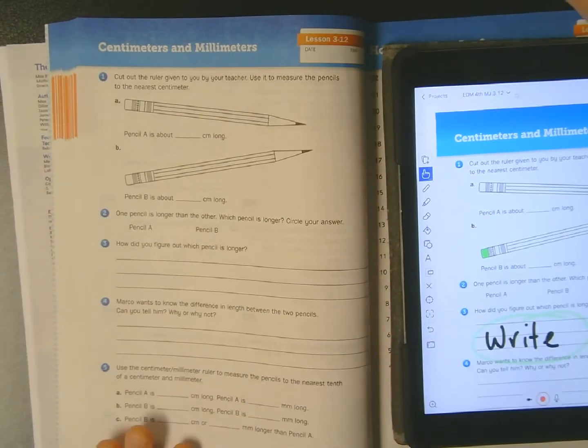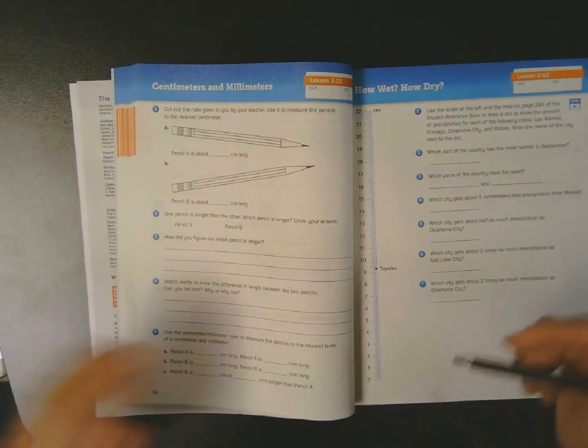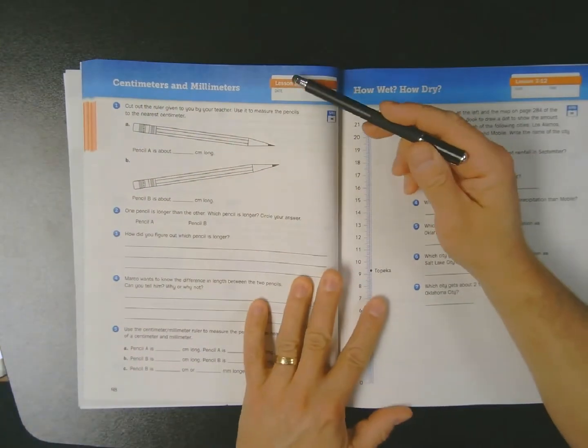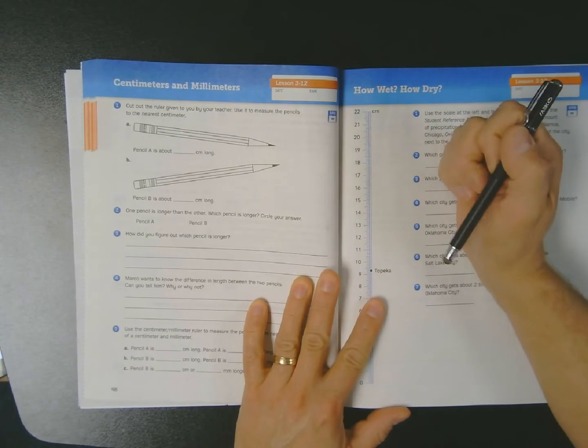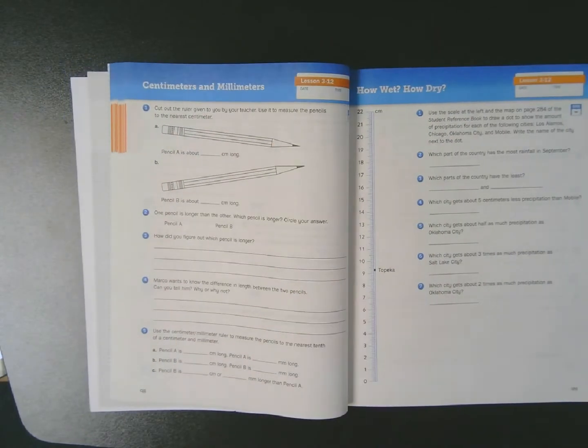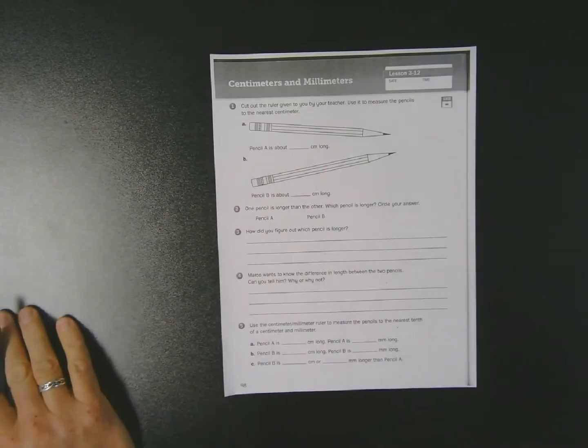So I'm going to do my video a little bit more old school for you today. I'm in my math journal on page 98, we're in unit 3 lesson 12, centimeters and millimeters.